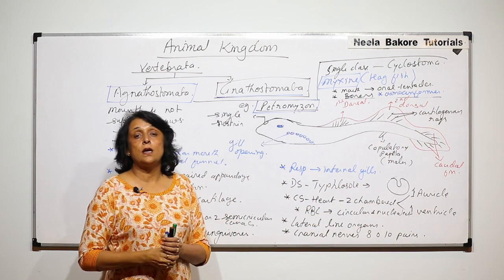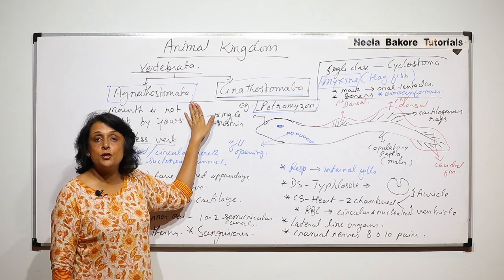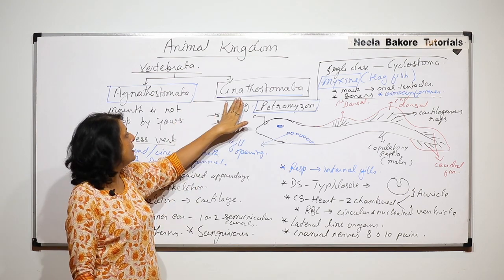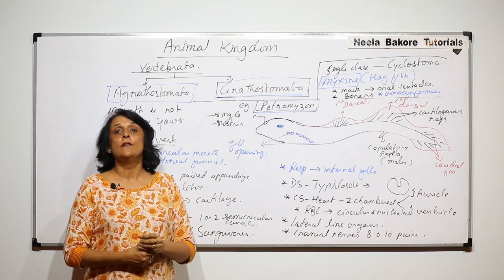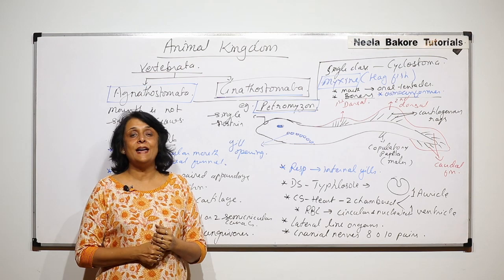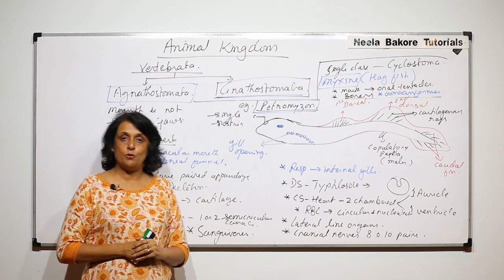So this is Agnathostoma which is one subdivision of Vertebrata. Now in the next part we will talk about Gnathostomata. That means in these animals the mouth is supported by jaws and then they are further divided into subgroups.